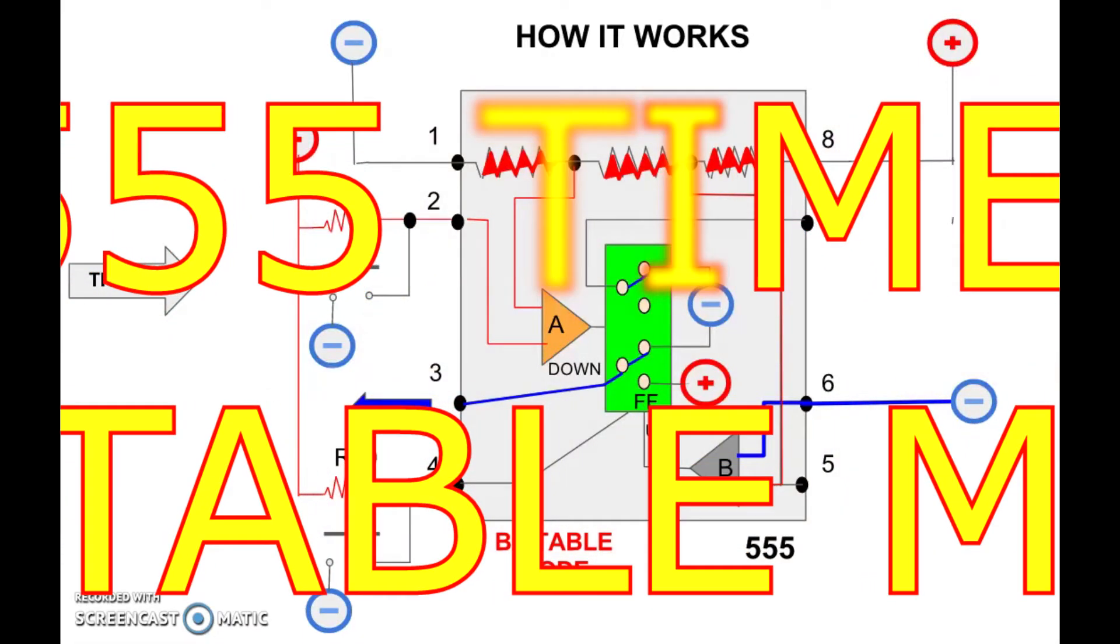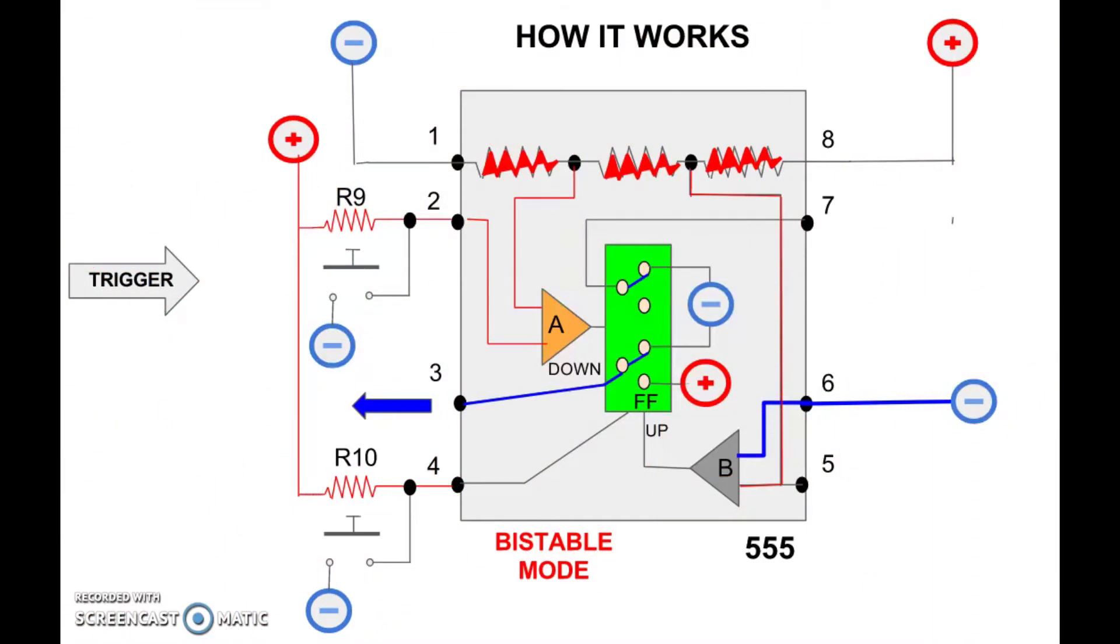The Bi-Stable 555 Timer Mode. Here is the internal layout of a 555 timer. The difference of the Mono and A-stable appears at the front side.